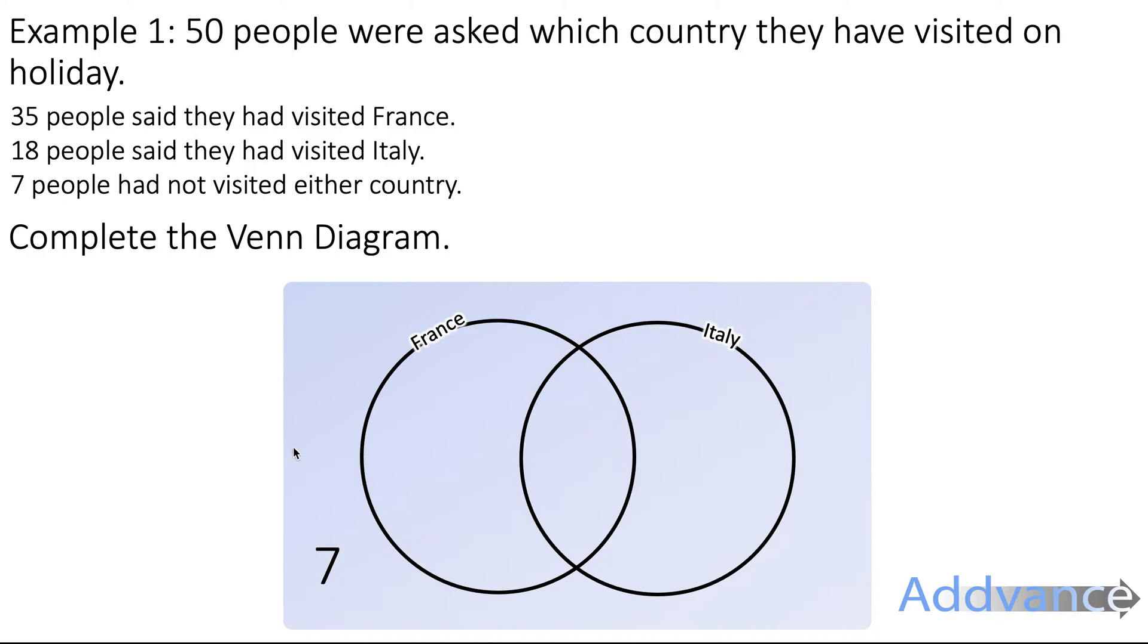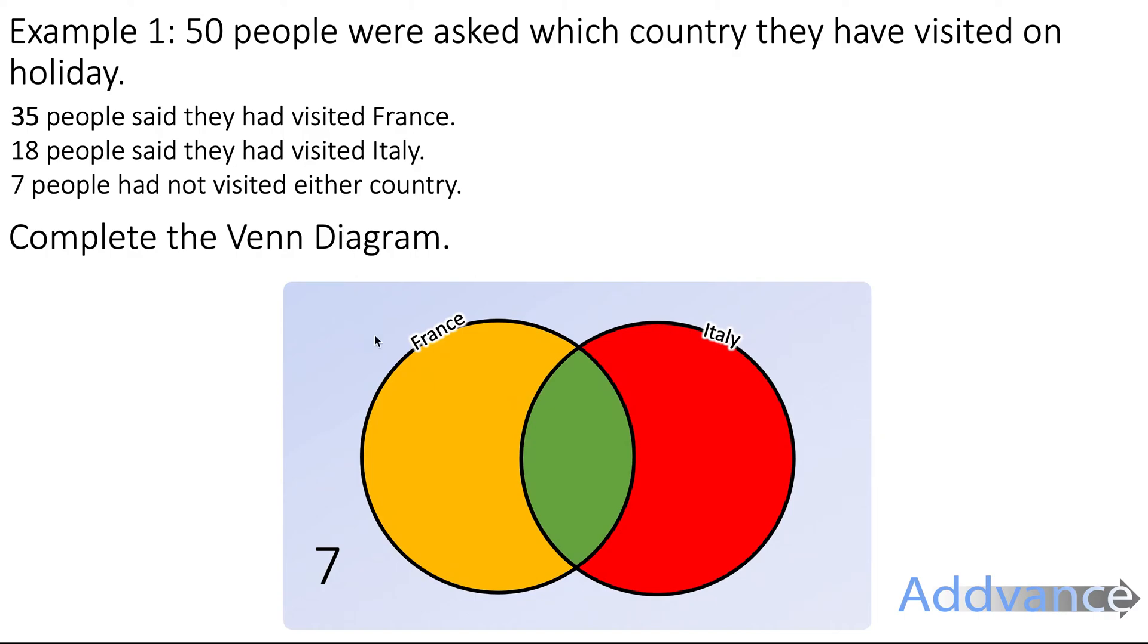Now we have to figure out how many people have visited just France, France and Italy and just Italy. This is a little bit more complicated than it looks originally. So what we're going to do is highlight it yellow, green and red and call it A, B and C. There's some number going to go at A, some number going to go at B and some number going to go at C. And we're going to write some equations for this.